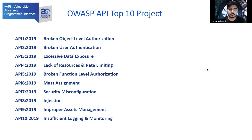Coming to the OWASP API top 10 project — it is an OWASP project and the first version came out in 2019. The entire VAPI project is based on the OWASP API top 10, as it follows examples from this project. A big shout out to this project.